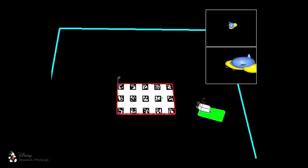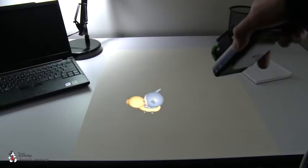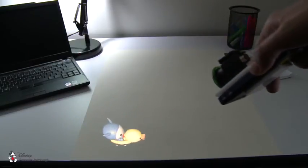We use the estimated device position and orientation to project anamorphic 3D imagery that appears geometrically correct to the user.